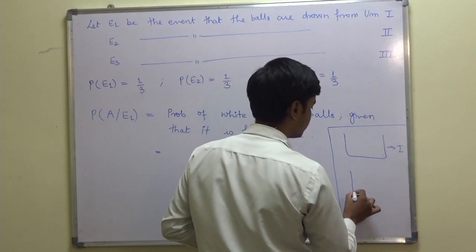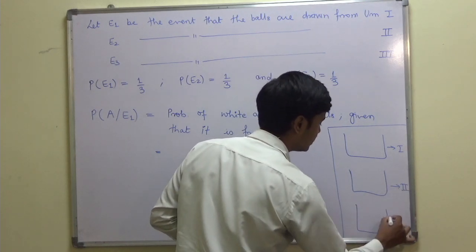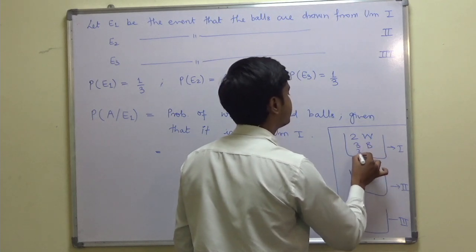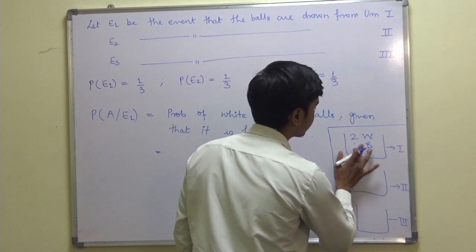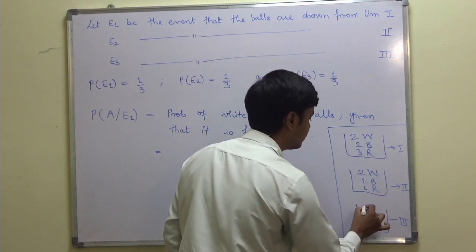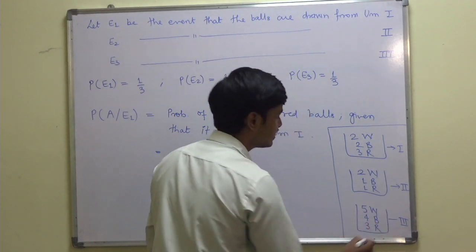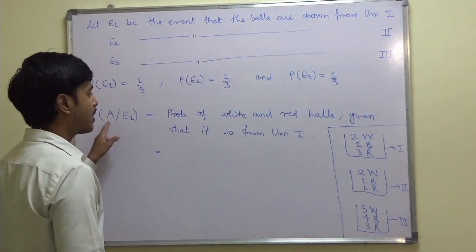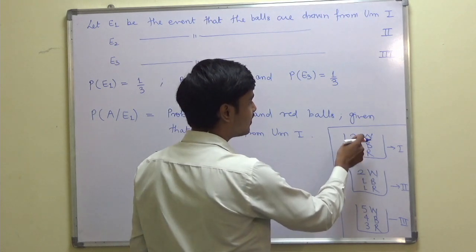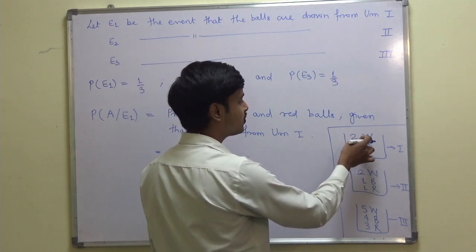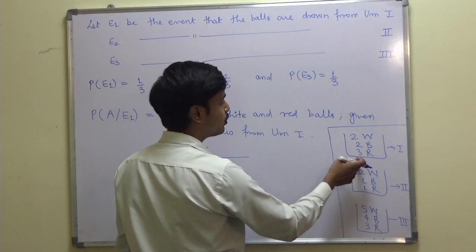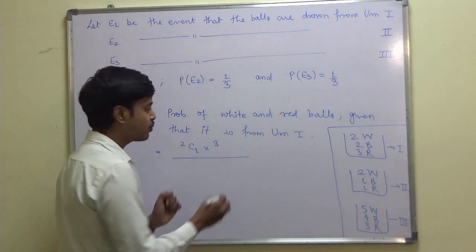In urn 1 we have 2 white, 2 black, and 3 red balls. In urn 2 we have 2 white, 1 black, and 1 red. And in urn 3 we have 5 white, 4 black, and 3 red. Now, the probability of choosing 1 white and 1 red ball from urn 1: we select 1 white from 2 in 2C1 ways, and 1 red from 3 in 3C1 ways. Total balls are 7, and we select 2, so total ways are 7C2.